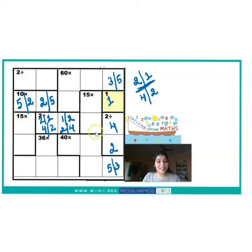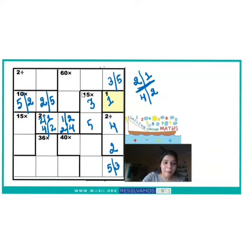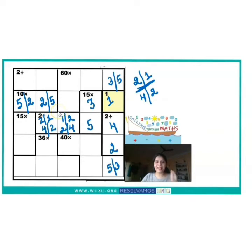Now looking at the ×15 cage, I have to find two numbers that multiply to give 15. The only possible pair between 1 to 5 is 5 and 3. But 5 is already there in this row, so 5 cannot come here. Therefore the number that comes here is 3, and the number below it is 5 — because 5 is definitely going to appear in this row from the ×10 cage, making 5 the only possibility for that lower block.